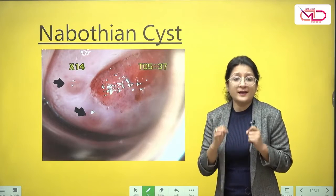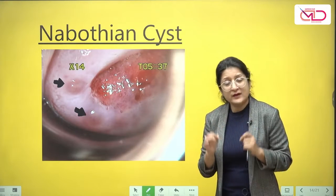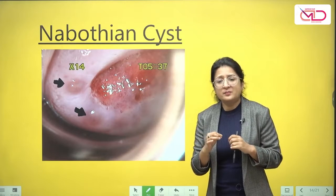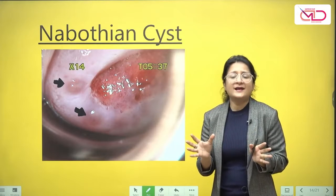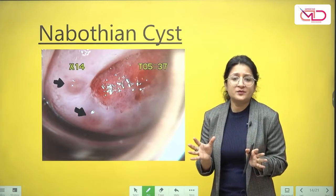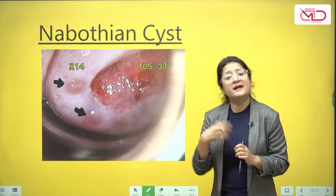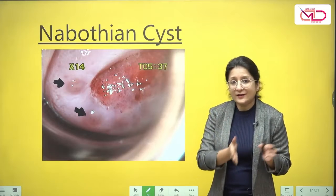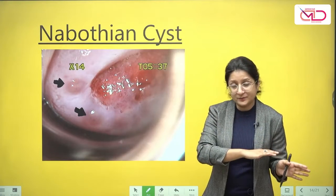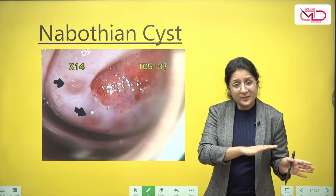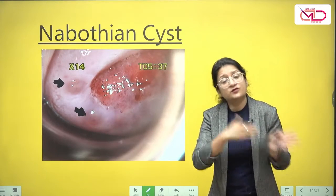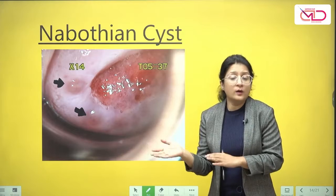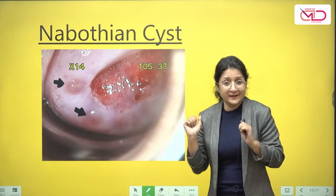To understand why they form, you need to have a very basic understanding of a concept which we call metaplasia — where one kind of normal epithelium transforms into another kind of normal epithelium.